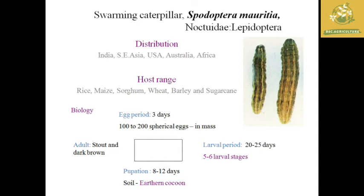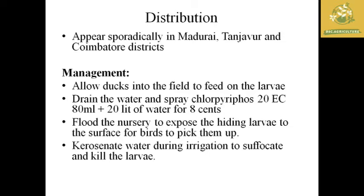Biology of army worm: egg period is around 3 days, laid in masses of 100 to 200. Larval period is 20 to 25 days with five to six larval stages. Pupation takes 8 to 12 days in an earthen cocoon in soil. The adult is stout and dark brown. In Tamil Nadu, it appears sporadically in Madurai, Thanjavur, and Coimbatore districts.